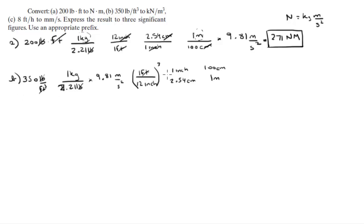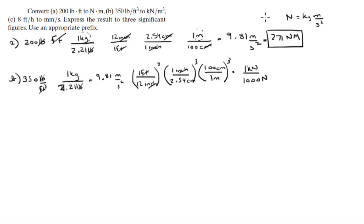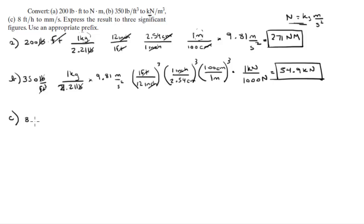Cubing each factor cancels cubic inches, then cubic centimeters. They want the answer in kilonewtons, so convert accordingly. When you plug all these numbers into your calculator, you get 54.9 kilonewtons per cubic meter.